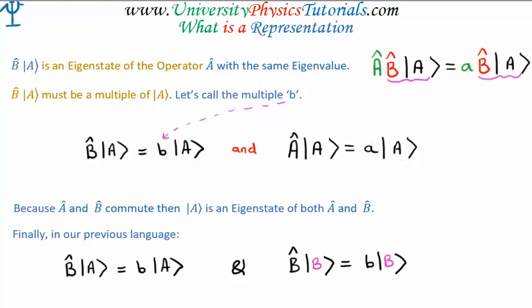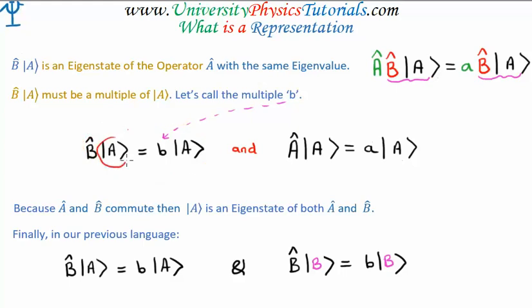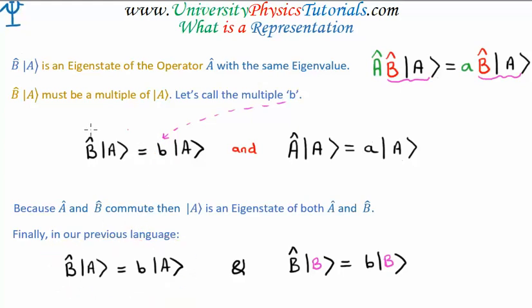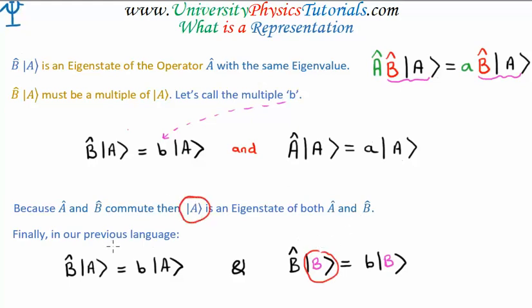To show this previous language in action: acting with operator B on quantum state vector |A⟩ gives back the same state and an eigenvalue. More generally, acting on an arbitrary quantum state with operator B causes it to collapse into an eigenstate of B with the same eigenvalue. The key point is that the eigenstates of B can be made up of a linear combination of the eigenstates of A, and that's why this equation holds true.